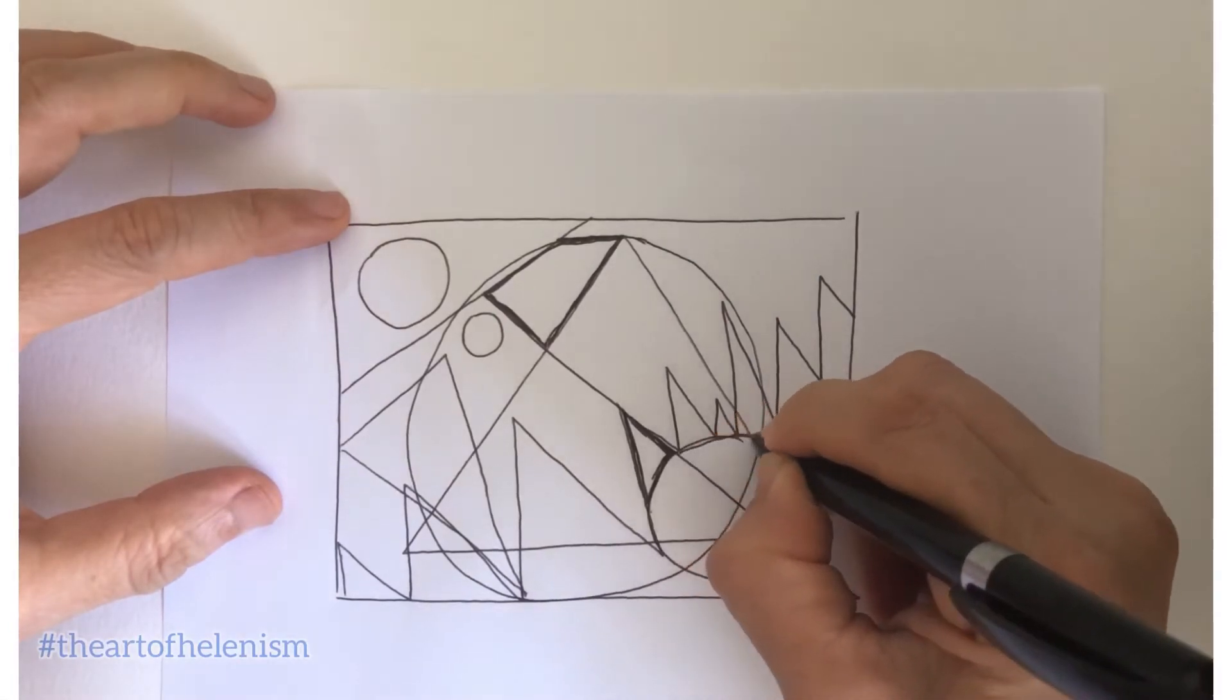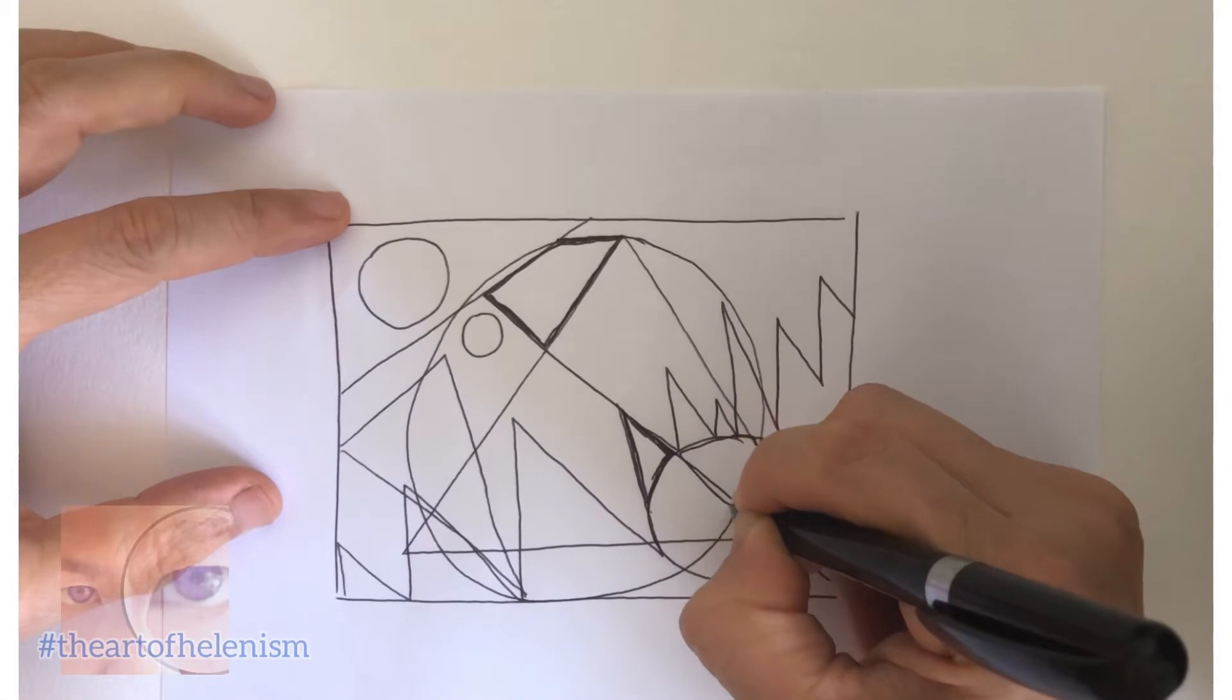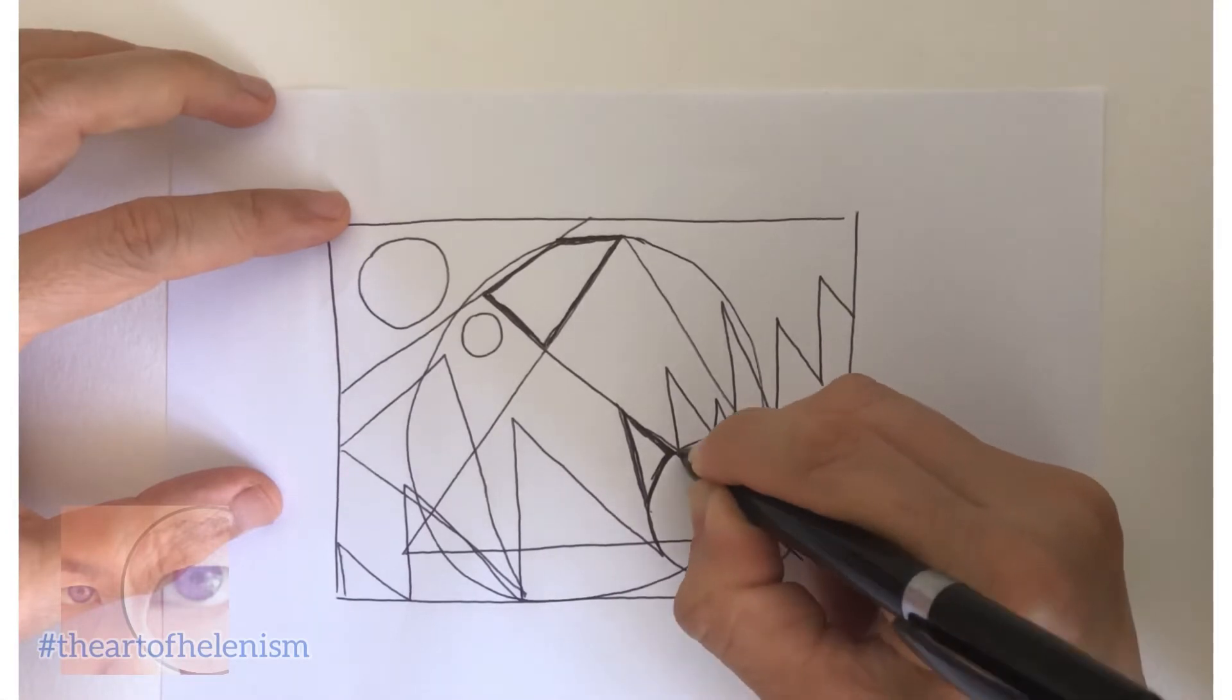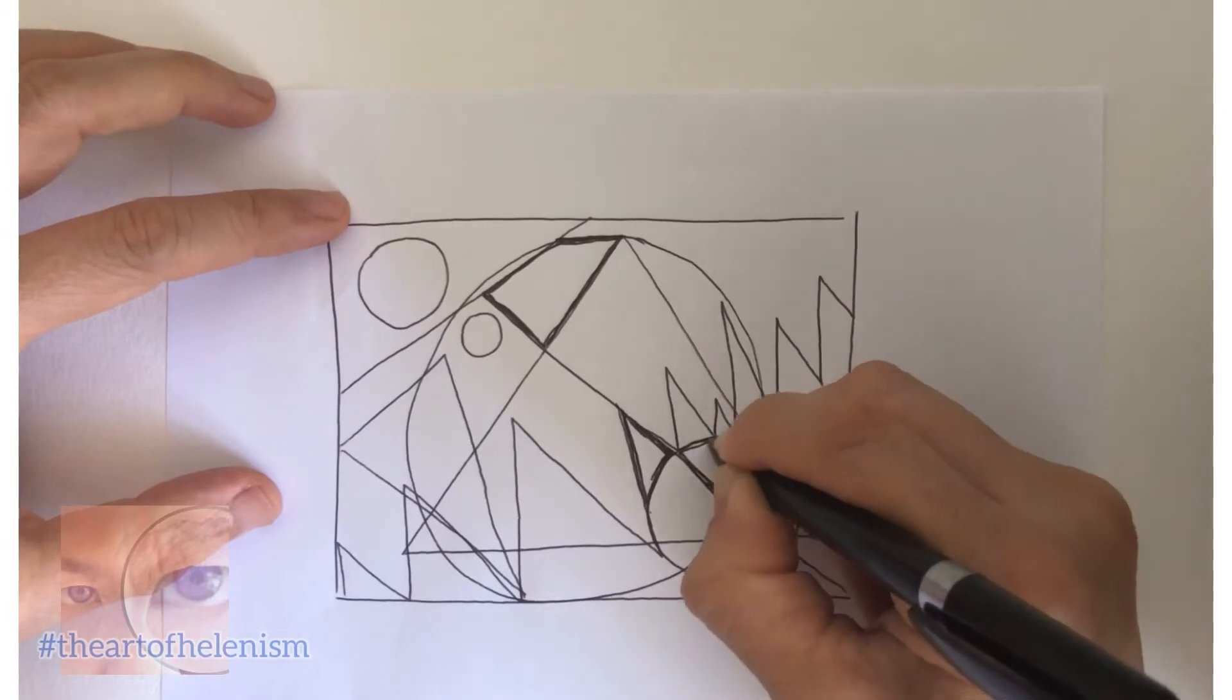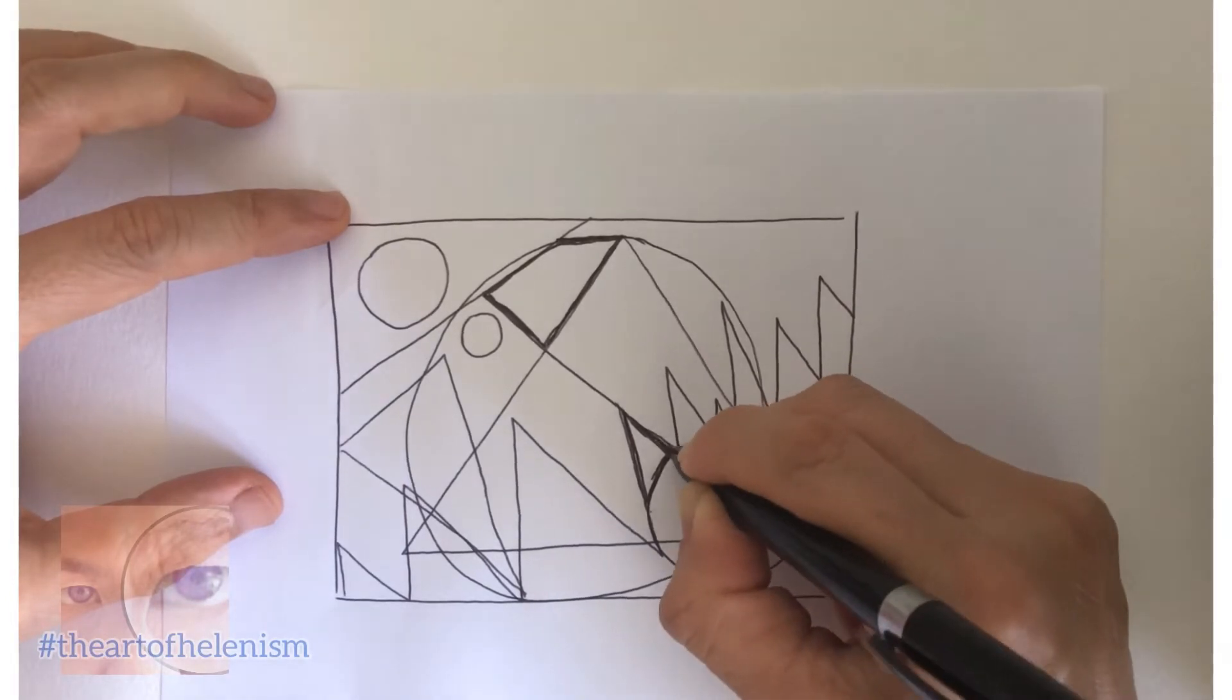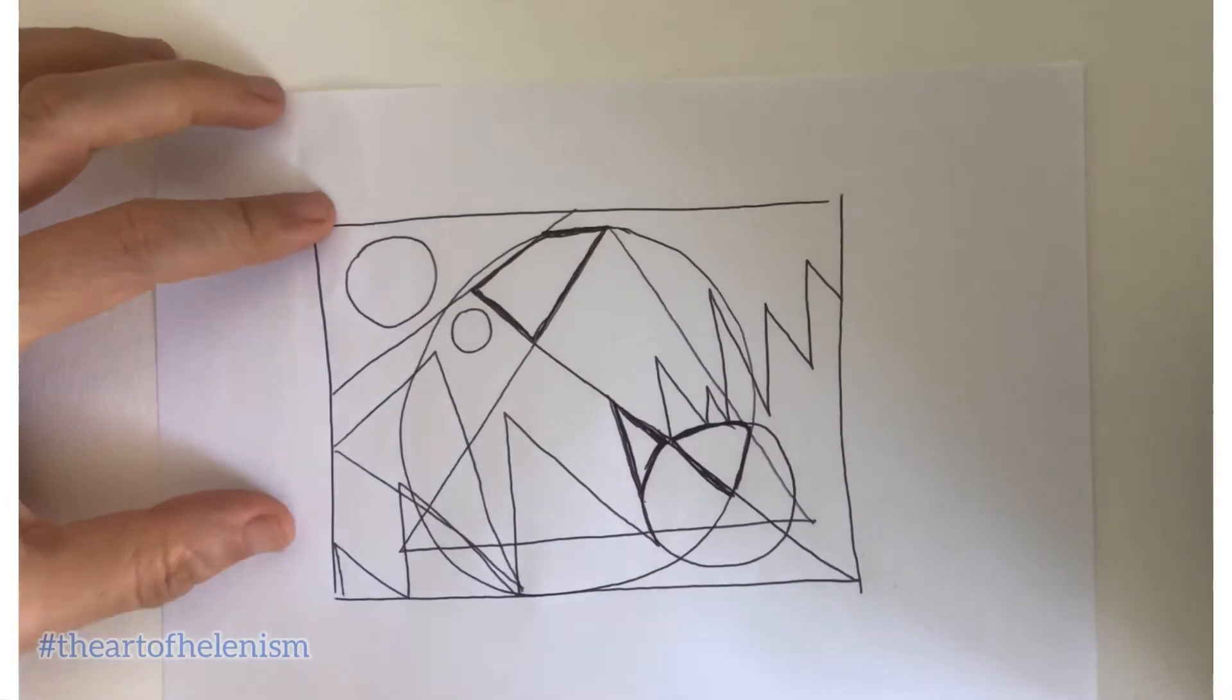Now find another shape. Anywhere inside the box. And darken it. Yes. It is looking fine.